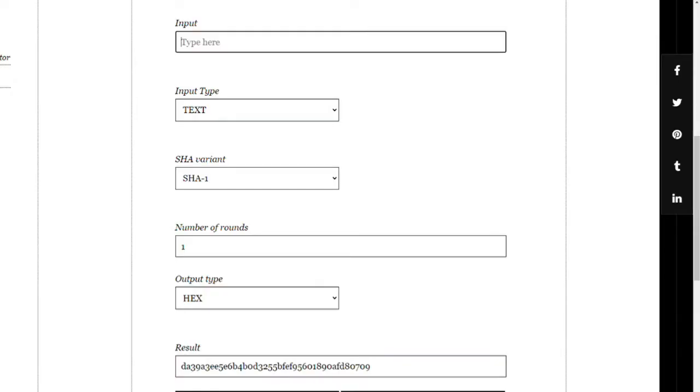Now, let us see that by checking with the secure hash algorithm converter. Let's type my name. You can see the hash value of my name. Now, if we change even a single letter, the whole hash value changes totally. You can see that.